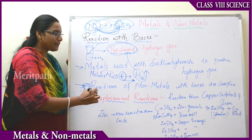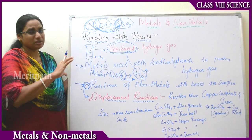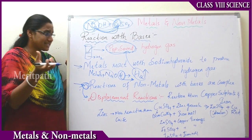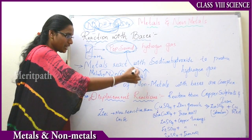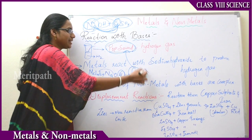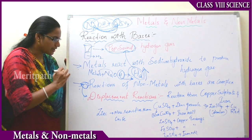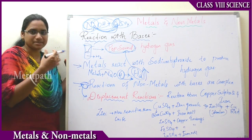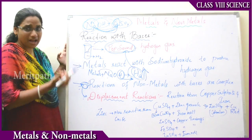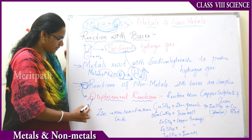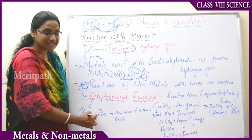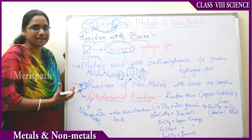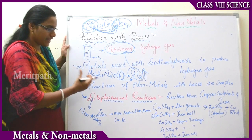The products formed when non-metals react with bases are complex compounds. When metals react, they form simple single molecules such as hydrogen and oxygen gases, which are released into the atmosphere. But when non-metals react with bases, they do not generate those gases; instead they form complex compounds. So the reaction of non-metals with bases is complex.